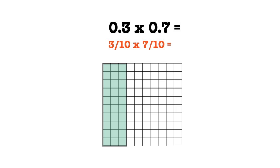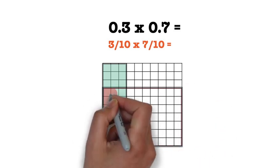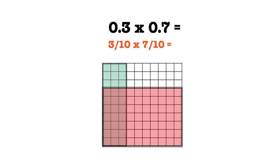Now we can model the second fraction, which is 7 tenths. This time we're going to look at the 10 rows that make up the grid. The numerator of the second fraction is 7, so we will need to shade in 7 of the 10 rows. Once we are done representing the two fractions on the grid, we're going to look at the double-shaded or overlapping area of the grid to find our answer.